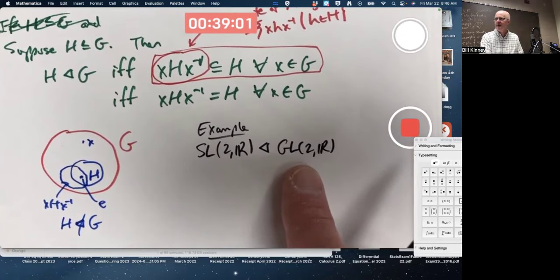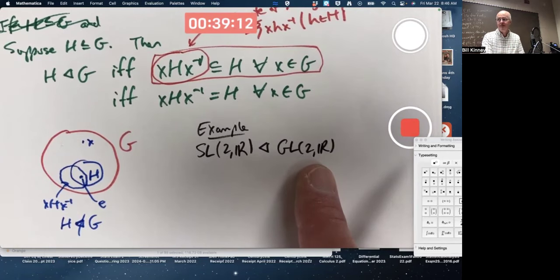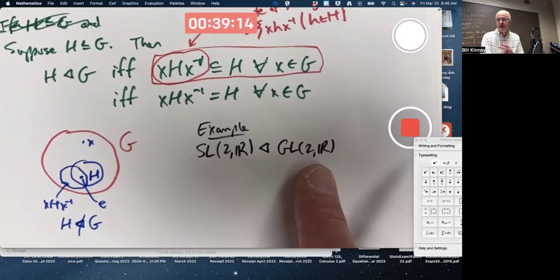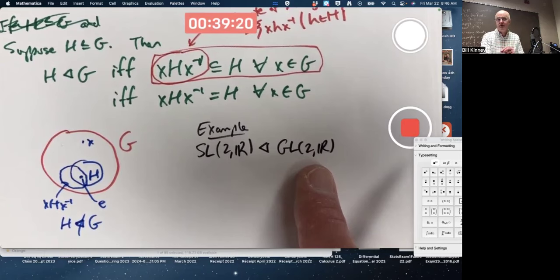GL(2,R), we've seen that before. That's called the general linear group of all two by two matrices with real entries whose determinant is non-zero so that they're invertible. We're talking linear algebra here. Under the operation of matrix multiplication, not matrix addition.